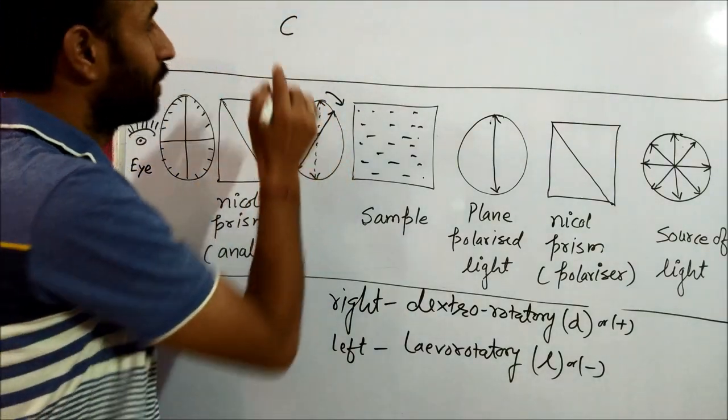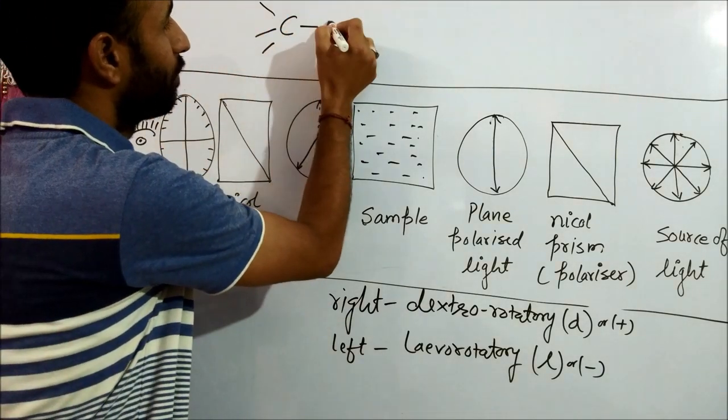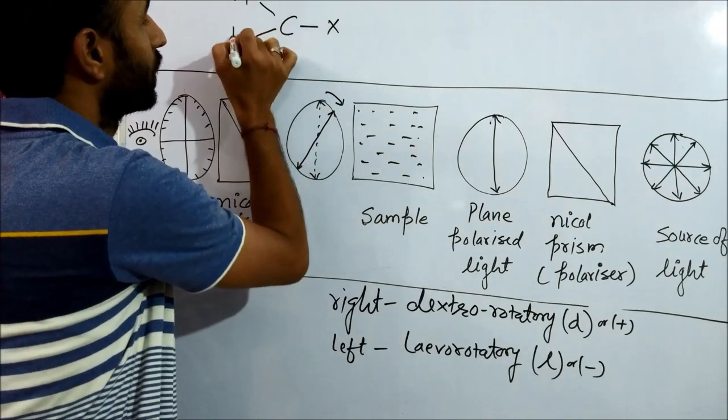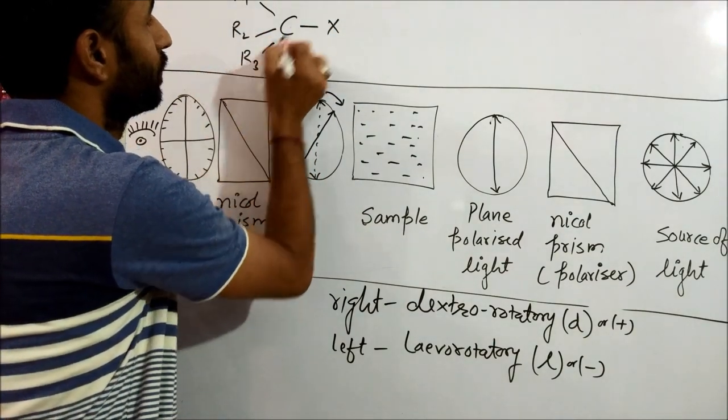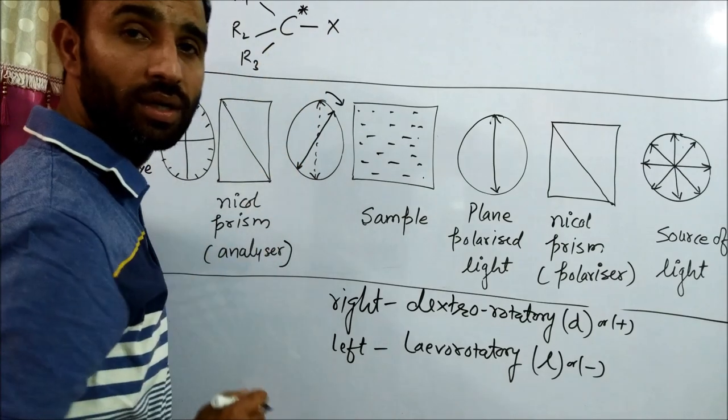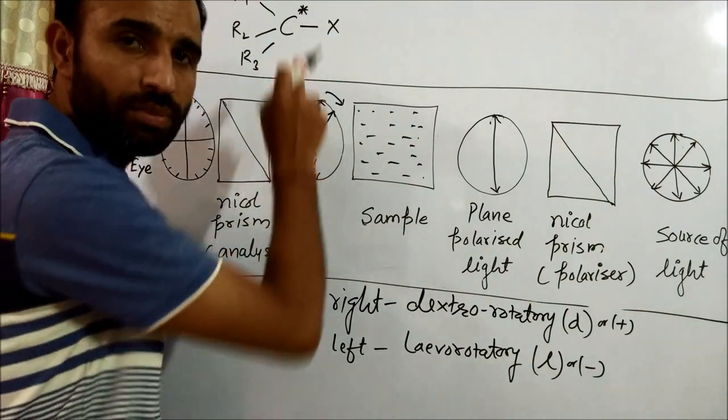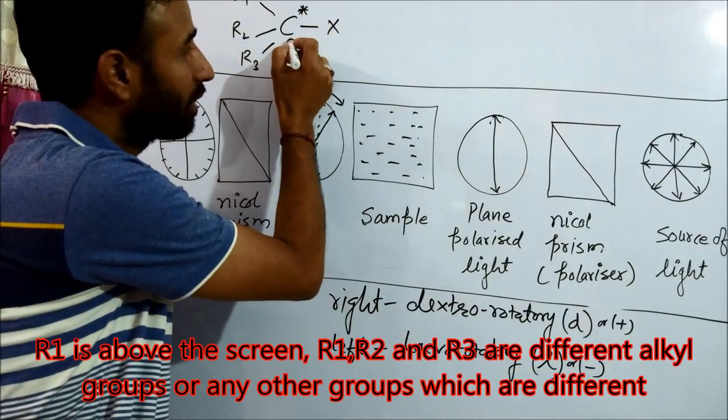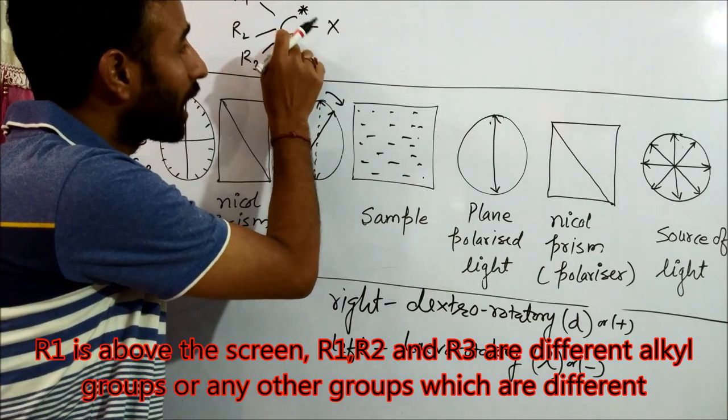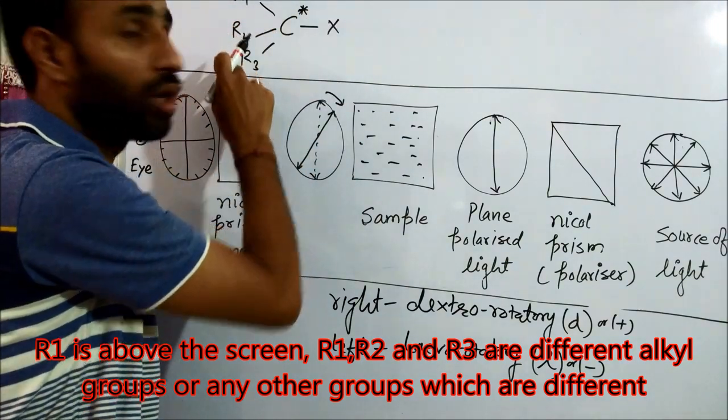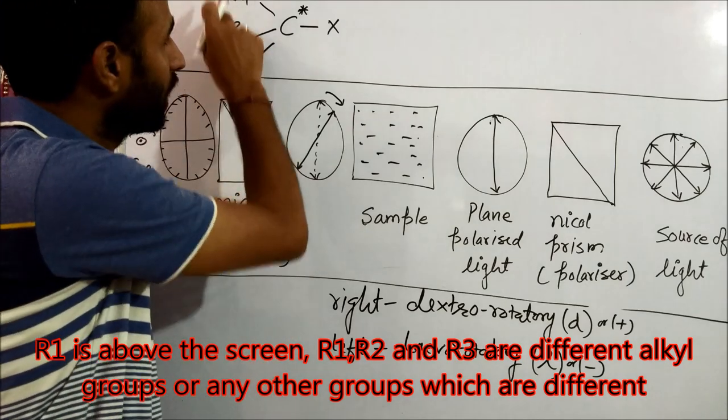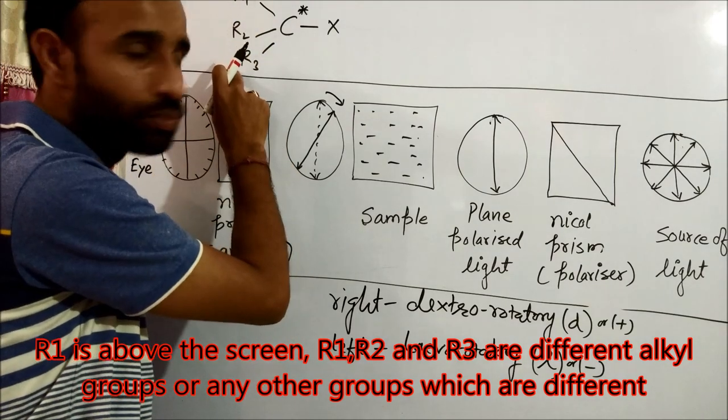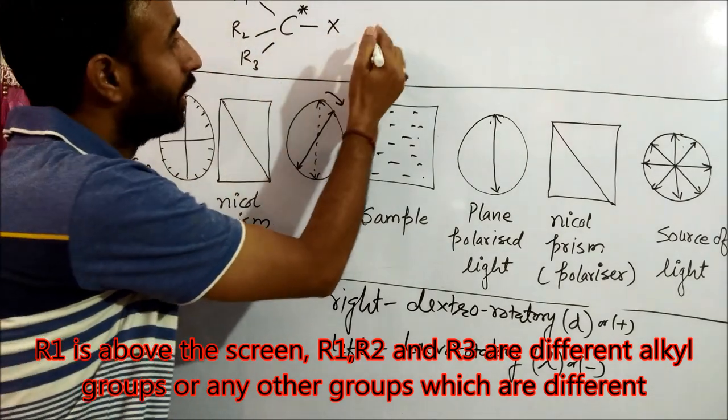First, as an example, if carbon has four different groups attached, this carbon is known as chiral carbon or asymmetric carbon. It means carbon attached to four different atoms or groups: R1, R2, R3 are different groups, X different.